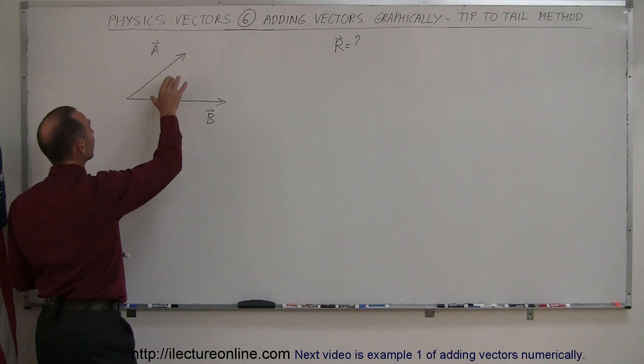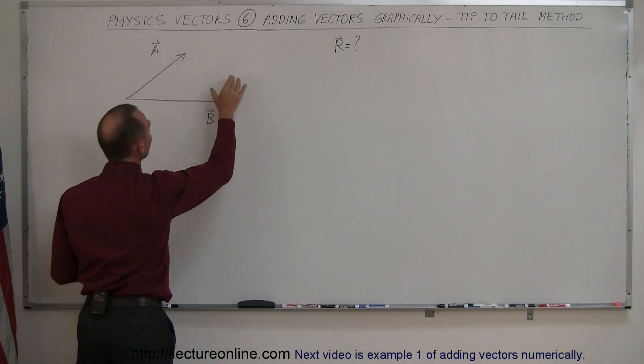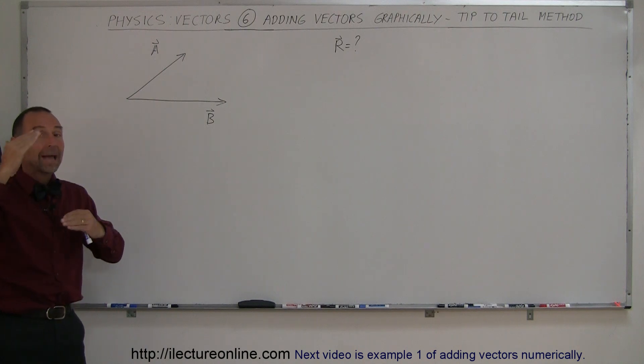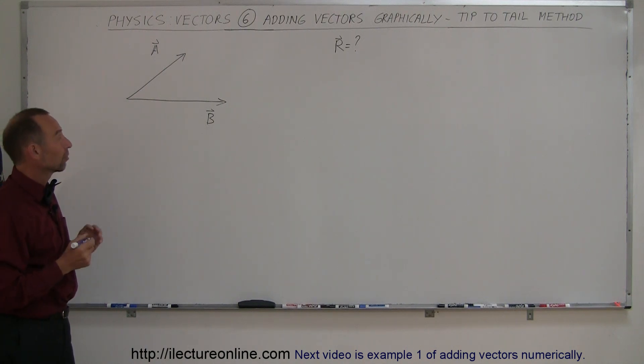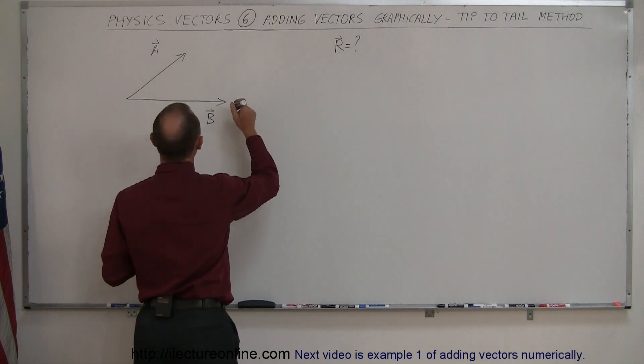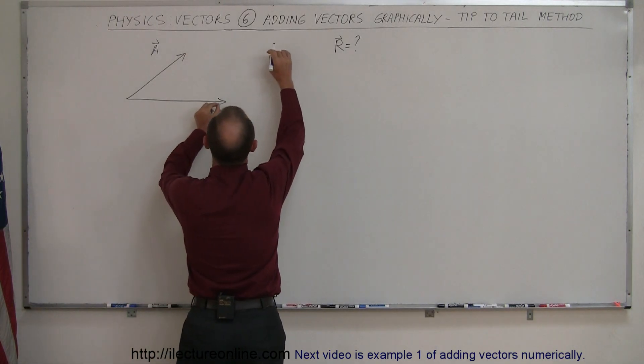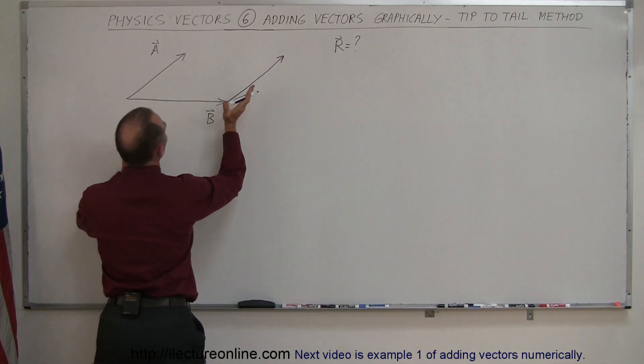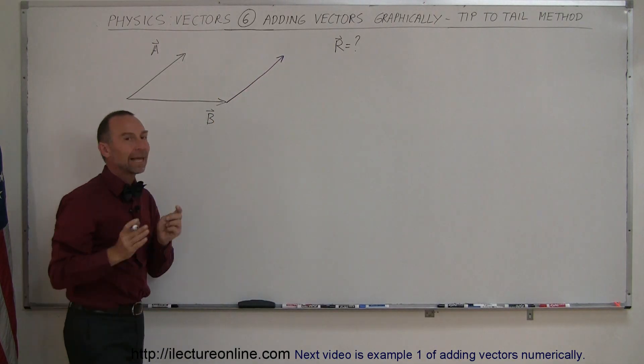And so what I'm going to do is I'm going to move vector A over to the right. Of course, what I cannot do is I cannot change the direction of the vector and I cannot change the magnitude or the length of that vector. As long as I keep those two the same, I have no change at all in my problem here. So I move this over, put it right there, and I redraw the vector over here. Notice it has the same direction and the same length.